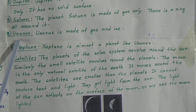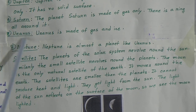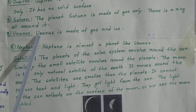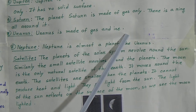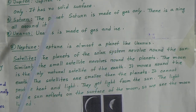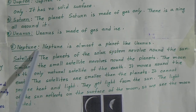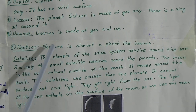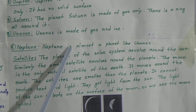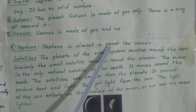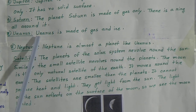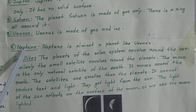Number 7: Uranus. Uranus is made of gas and ice. Number 8: Neptune. Neptune is almost a planet like Uranus.